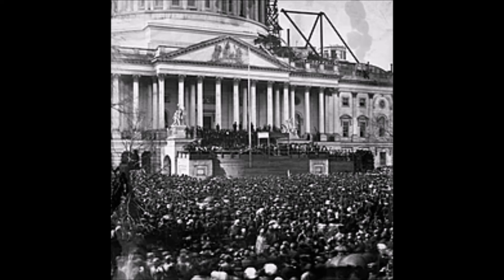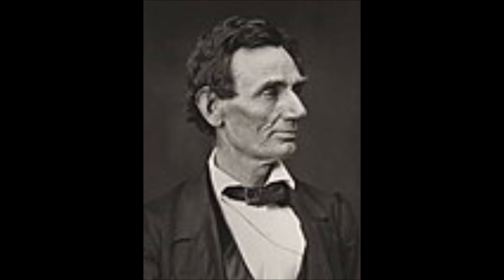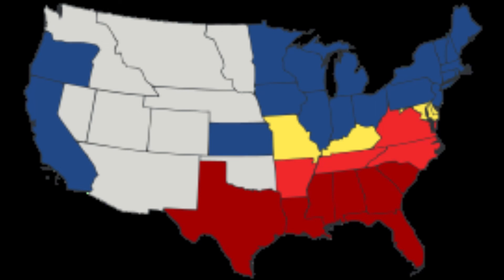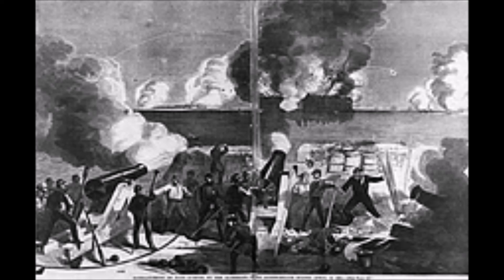Lincoln's victory and his imminent inauguration as president was the immediate cause for declarations of secession by seven Southern states: South Carolina, Mississippi, Florida, Alabama, Georgia, Louisiana, and Texas, which then formed the Confederate States of America. Lincoln took no action against the secessionists but declared that secession had no legal validity and refused to surrender federal property in those states. The standoff continued until mid-April when Confederate President Jefferson Davis ordered Confederate troops to bombard and capture Fort Sumter. President Lincoln then called for troops to put down the rebellion, which ended the possibility of a peaceful resolution. Virginia, Arkansas, Tennessee, and North Carolina joined the Confederacy immediately after.